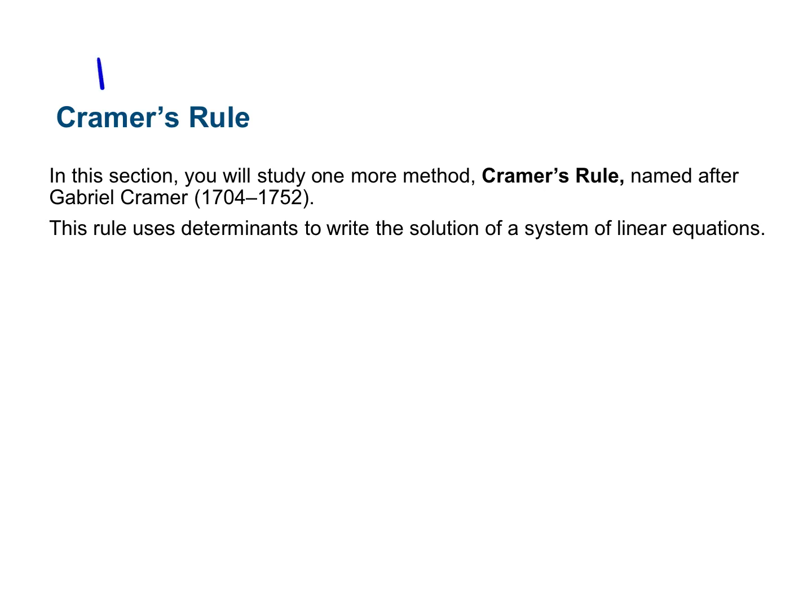All right, 11.5. So in 11.5, we're going to talk about Cramer's rule. We use determinants to write the solution of a system of linear equations. We're continuing with what we did in 11.4, where we find the determinant. We're doing the same thing here, but we're going to take it one step further.